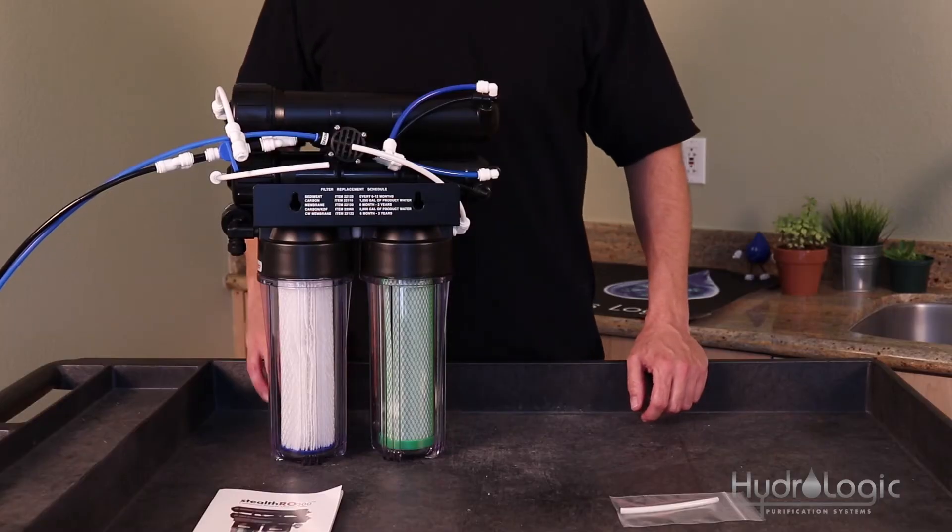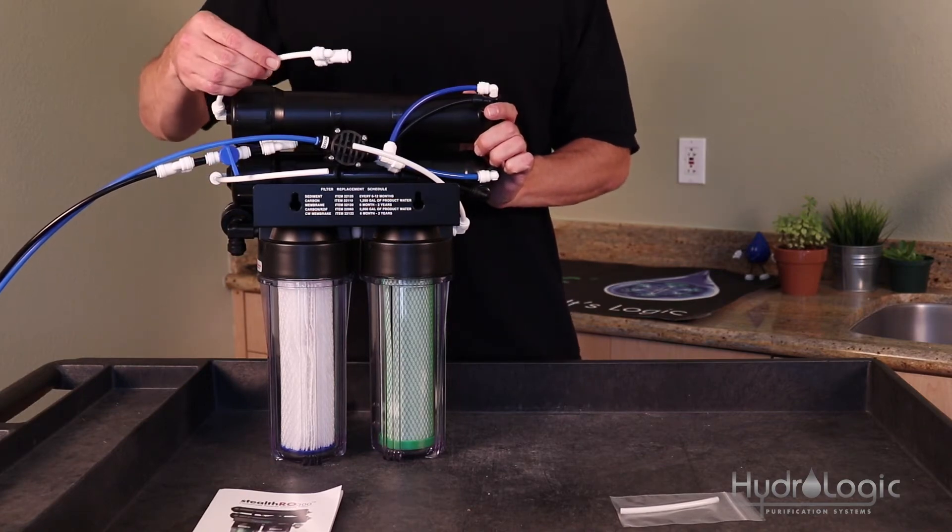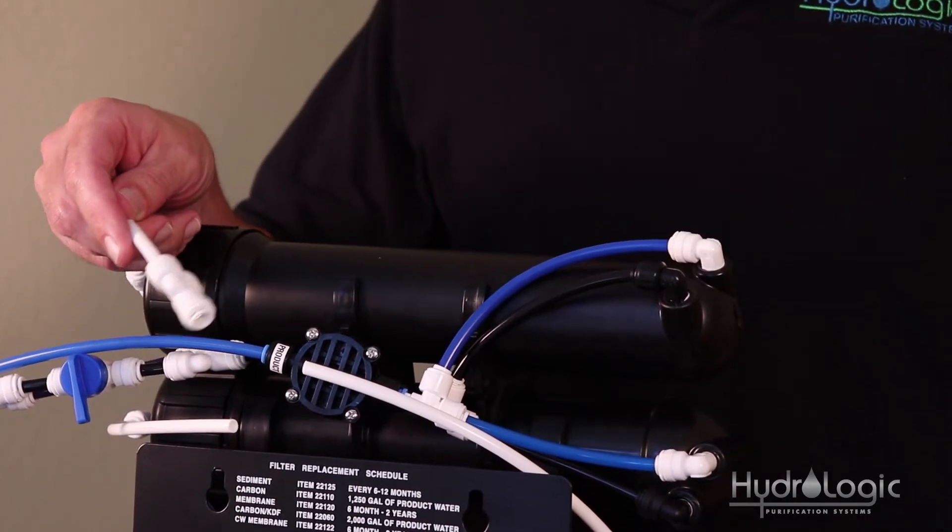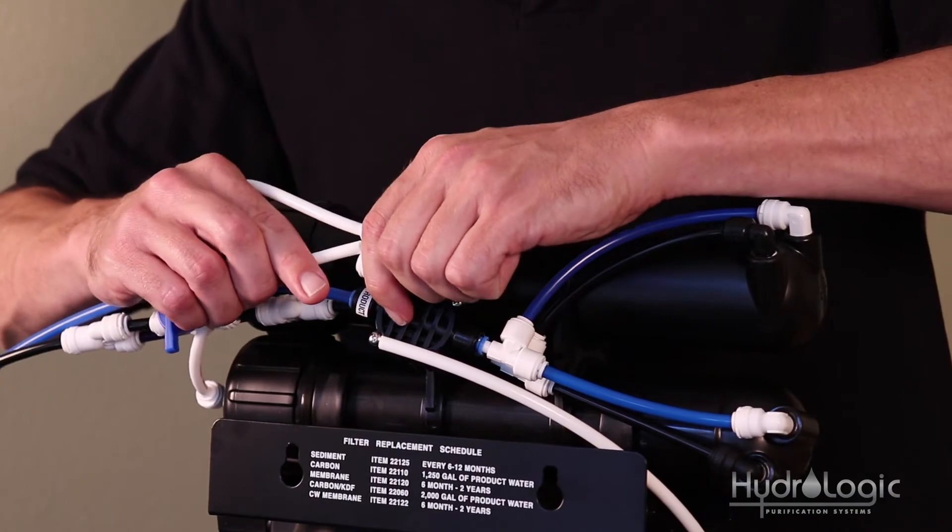Now, the next step, if you'll notice on your new membrane assembly, you came with this length of white tubing and a splitter, or a Y. Some people call them Y. Some people call them splitters.